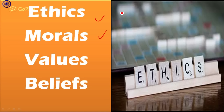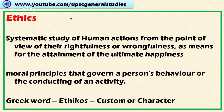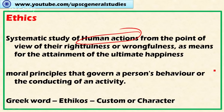First, let's look at what ethics is. Ethics is a systematic study of human actions — it's a study of human actions from the point of view of their rightfulness or wrongfulness as means for the attainment of ultimate happiness. Ethics is a branch of philosophy called moral philosophy, and it is a systematic study of human actions from the point of view of their rightfulness or wrongfulness for the attainment of ultimate happiness of society.